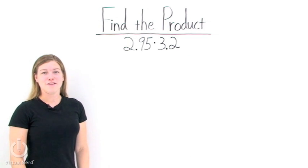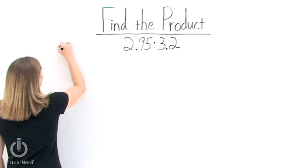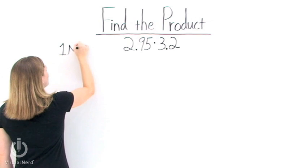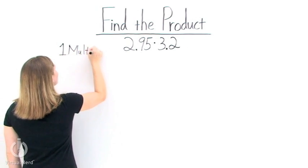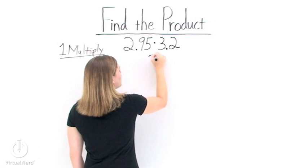Let's find the product of 2.95 and 3.2. Notice that both of the numbers we're multiplying together have decimal points in them. So our first step is to simply ignore those decimal points and multiply the numbers together as we normally would.